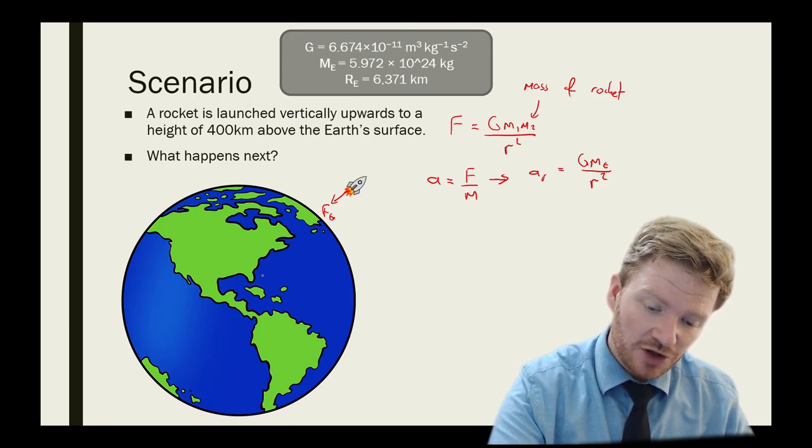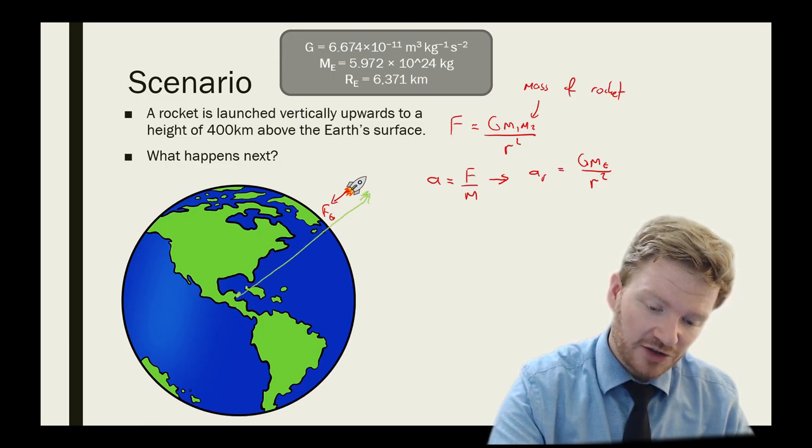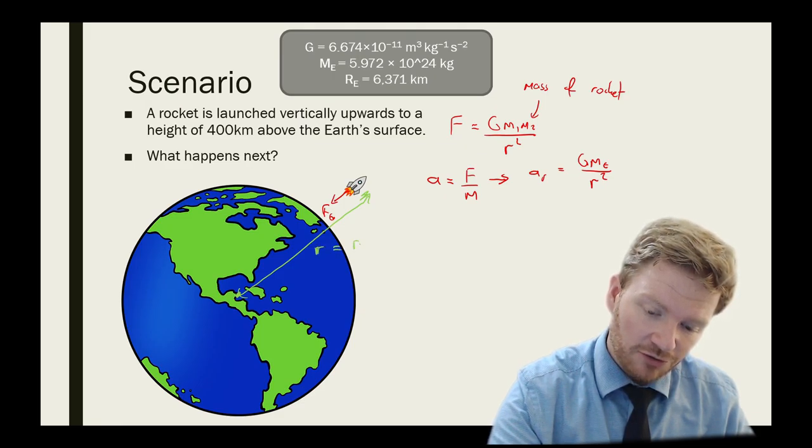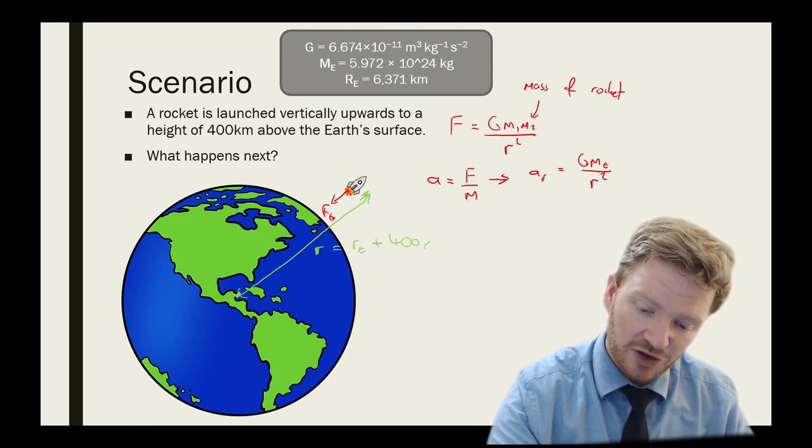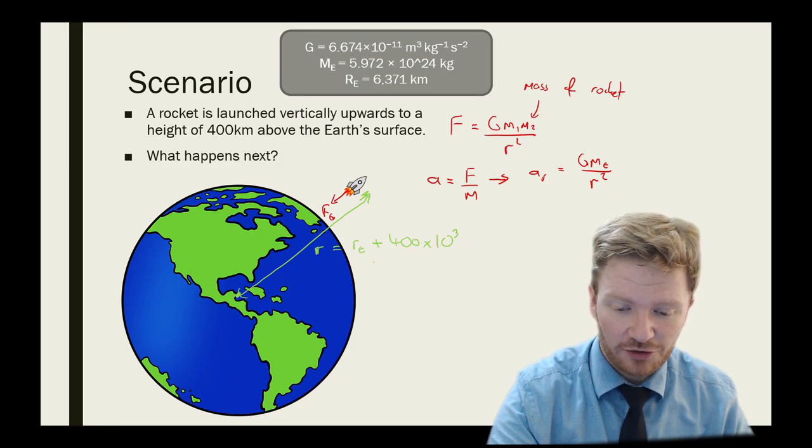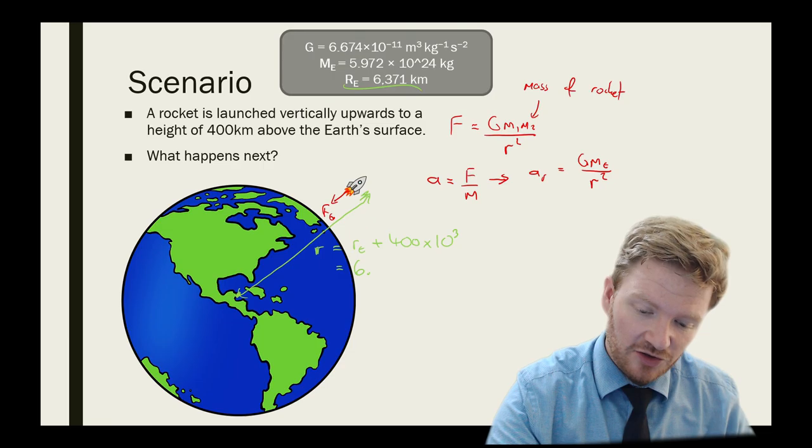So straight away, you can see there is going to be an acceleration of my rocket, and I can go ahead and calculate what that will be. Remember, I need to use R here, not just distance. So R will equal the radius of the Earth plus 400 kilometres, 400 × 10³. So that will be 6371 × 10³ + 400.